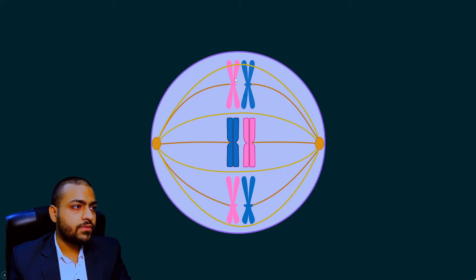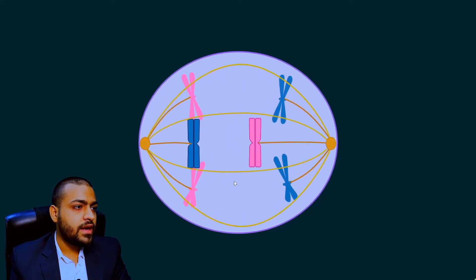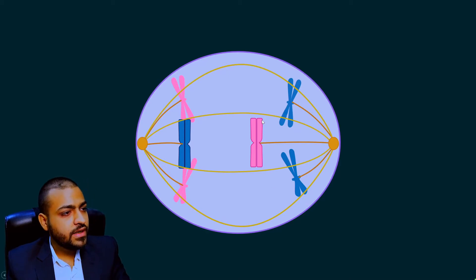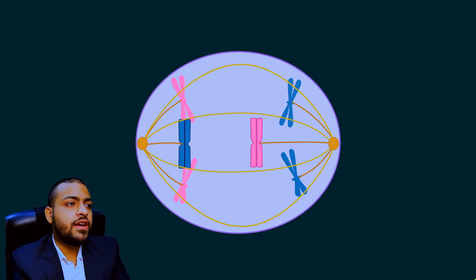Here all these kinetochore spindle fibers were working very nicely, but here this kinetochore spindle fiber has lagged behind. It was not working nicely, it was lazy enough that it could not pull this chromosome enough as these, so it has lagged behind during anaphase and this is called anaphase lag. What is the result of this anaphase lag?